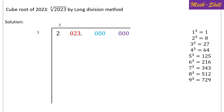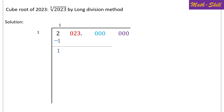1³ = 1, and 2 minus 1 = 1. We then bring down the first group of three digits, 023, making the remainder 1023.